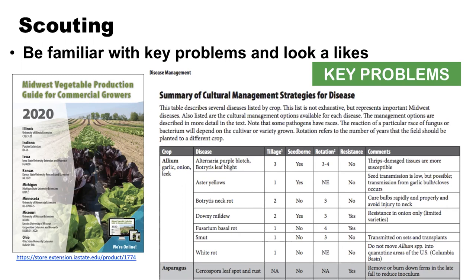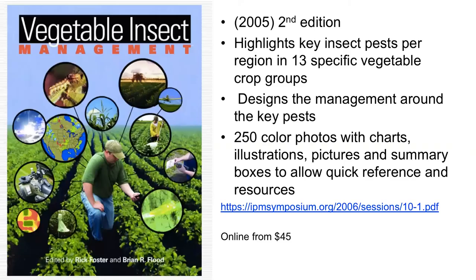When it comes to printed options, my favorite book for vegetable insect management is the 2005 second edition of the Vegetable Insect Management book, edited by Rick Foster and Brian R. Flood. It highlights key insect pests per region in 13 specific vegetable crop groups, designs management around the key pests, and has 250 color photos with charts, illustrations, and summary boxes that allow quick reference. You can find it online for about 45 dollars.